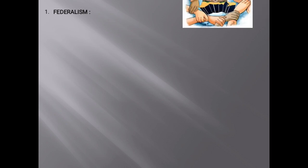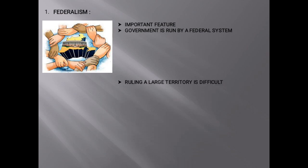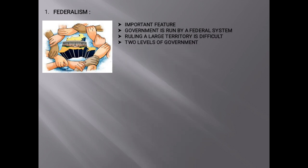The first one is Federalism. One of the most important features of our constitution is the federal system. In countries with large territories or huge populations, government is run by a federal system. Ruling a large territory from a single capital city is not only difficult, but also may lead to the neglect of some far-flung areas. People residing there cannot participate in the affairs of the government. Therefore, governments function at two levels in a federation.